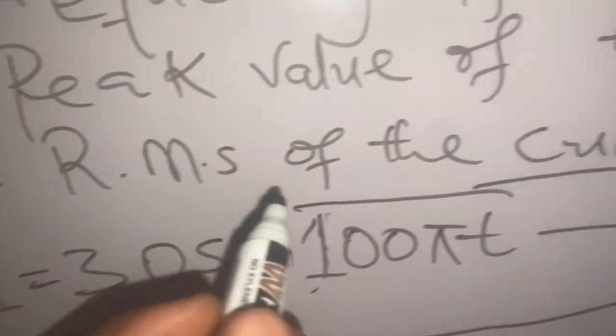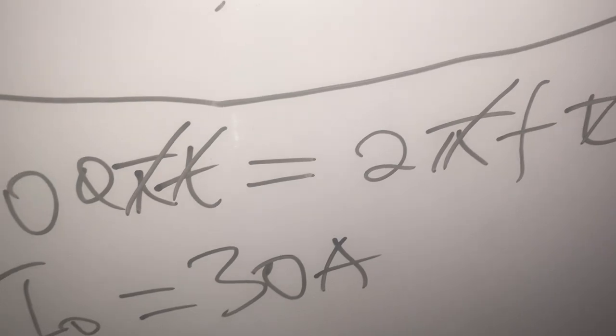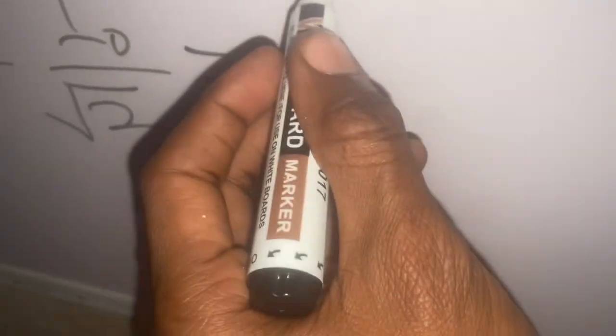The third question: find the root mean square of the current. To find the RMS current, we remember that I_rms equals I₀ divided by √2. Since I₀ is 30, we have I_rms equals 30 over √2.